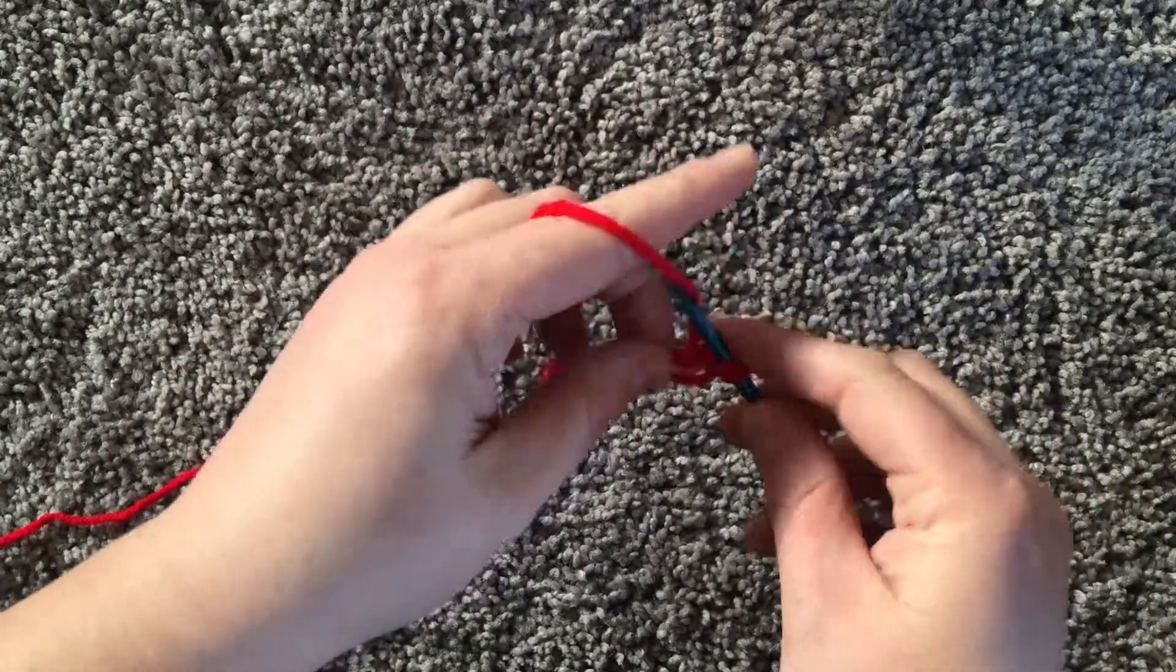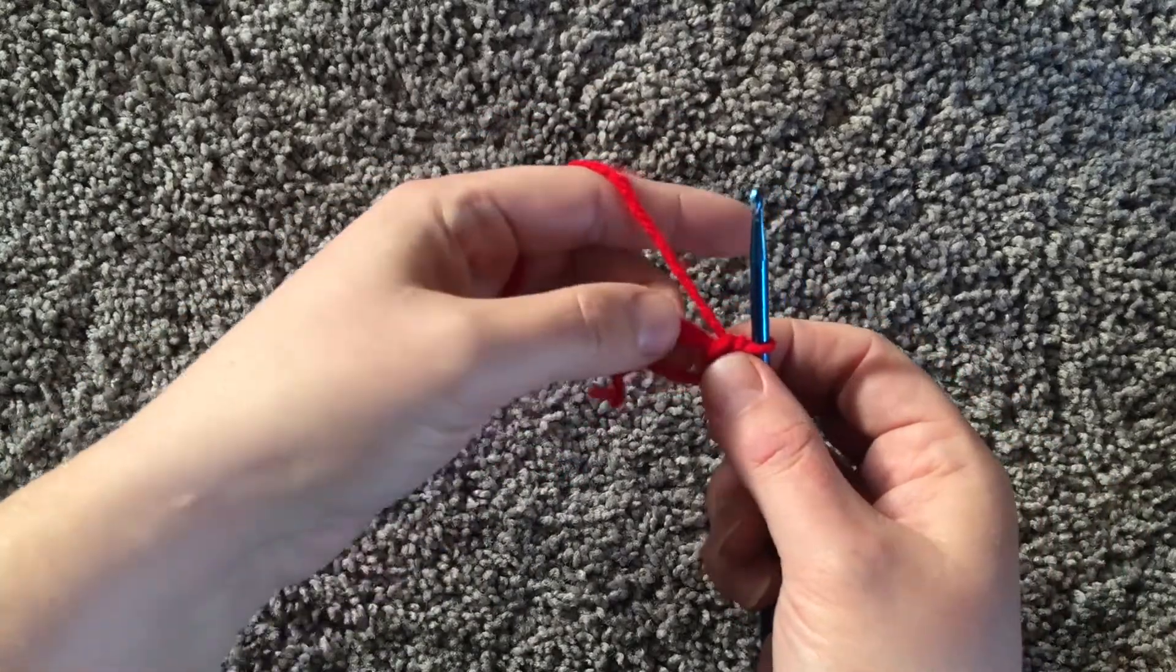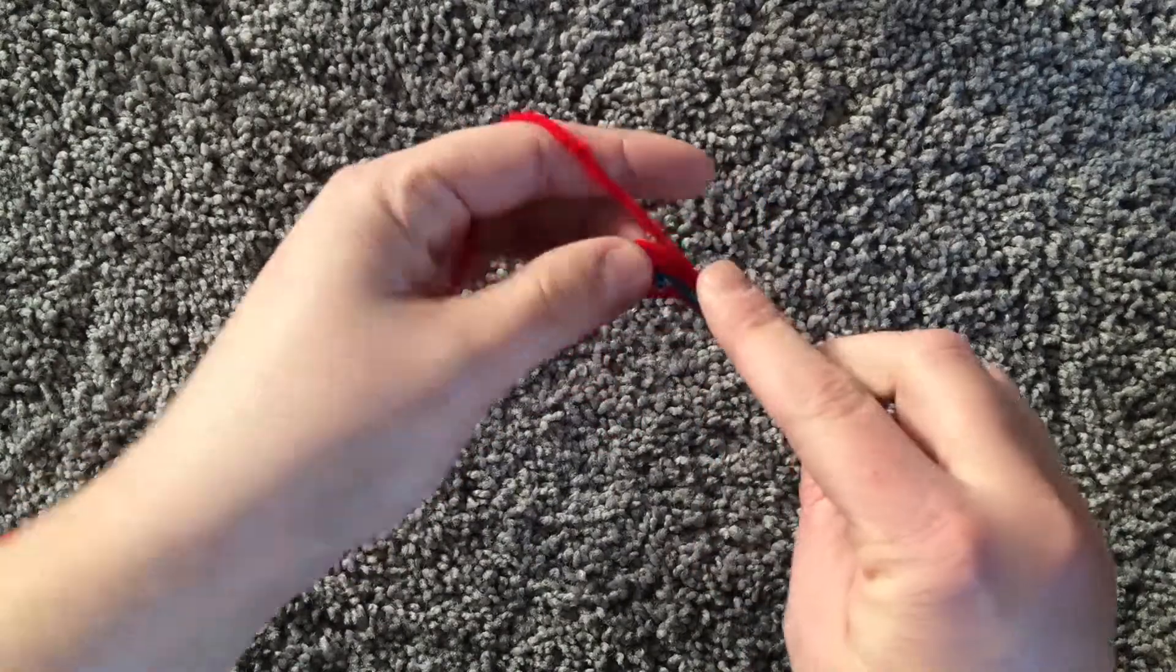Then insert your single crochets or double crochets, whichever your pattern prefers, within the ring, making sure you completely cover both of these strands the whole way.